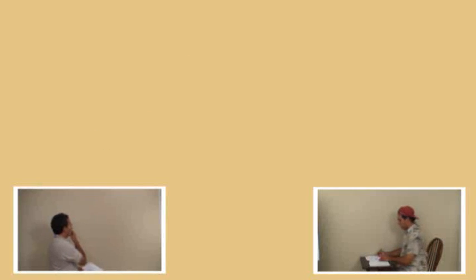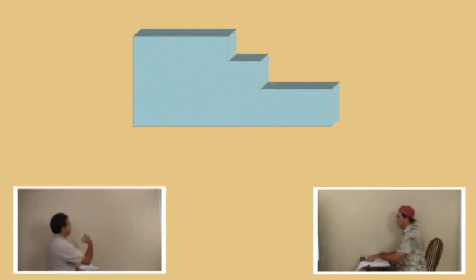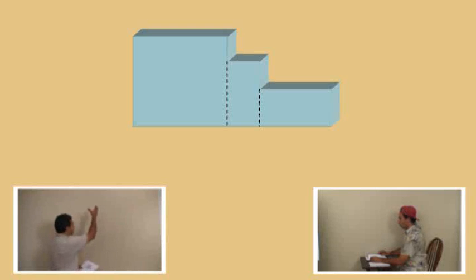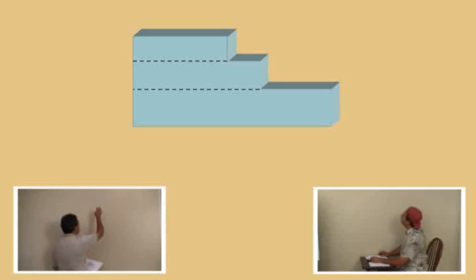Okay. So length times width times height. So here is our staircase right here. We're looking at it. That's our solid that we're going to deal with. Now, we can break up this staircase into rectangular solids using vertical slices here. And there we have three separate rectangular solids. Or we can do horizontal slices. And if we do that, we have the top, middle, and the bottom one. And for the purposes of doing this problem, we're going to stick with the horizontal slices.